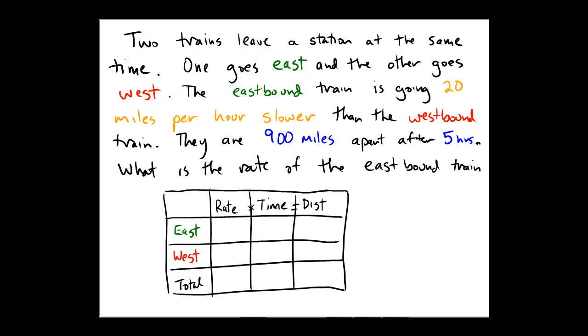In this problem we do not know either of the train's actual rates, so we're going to set up a chart and some equations to put this information together. The first unknown is the rate of the westbound train. They're both unknown, but let's call the rate of the westbound train equal to x.